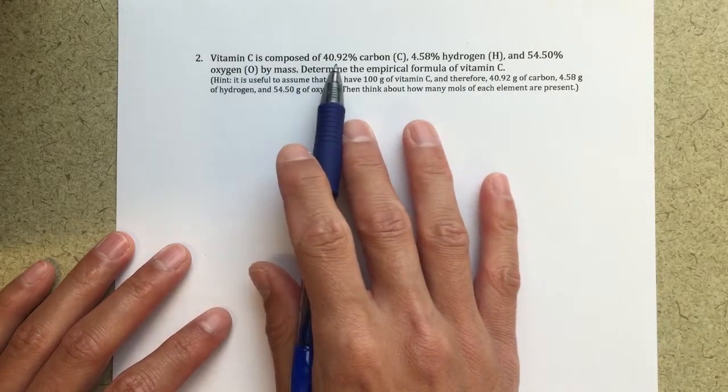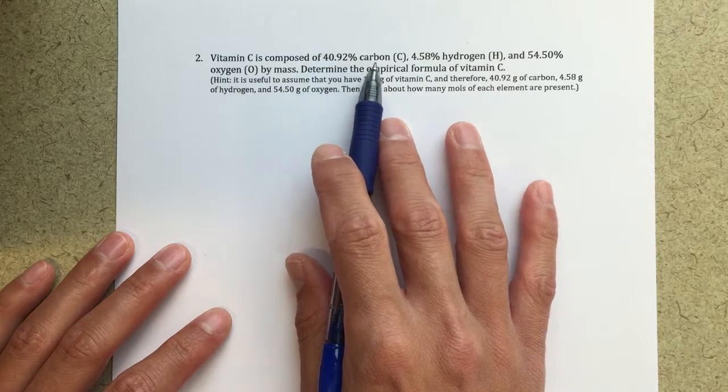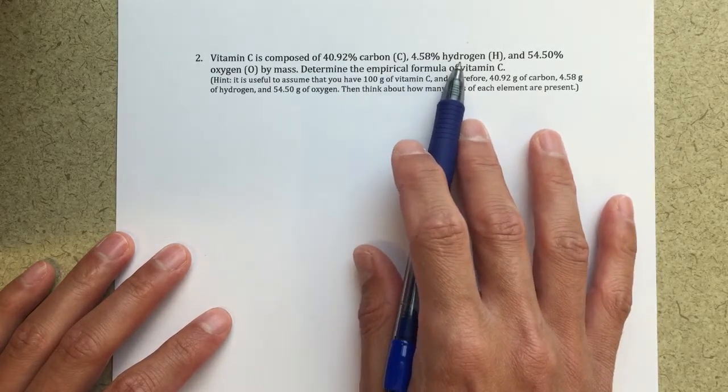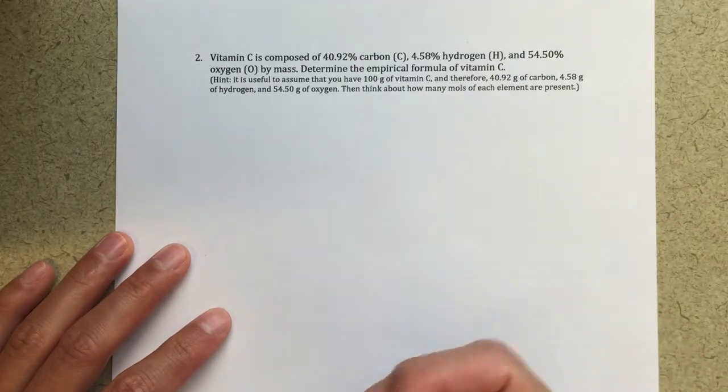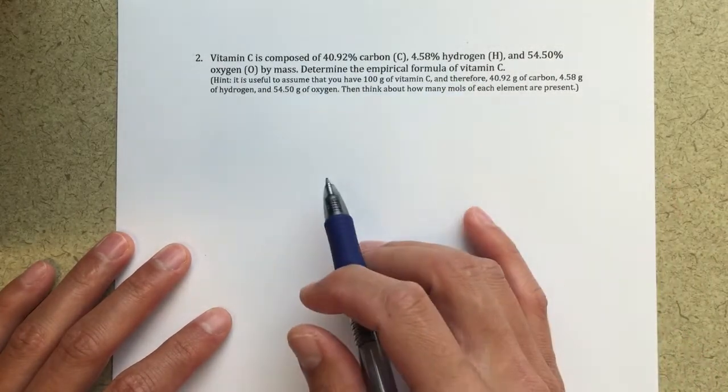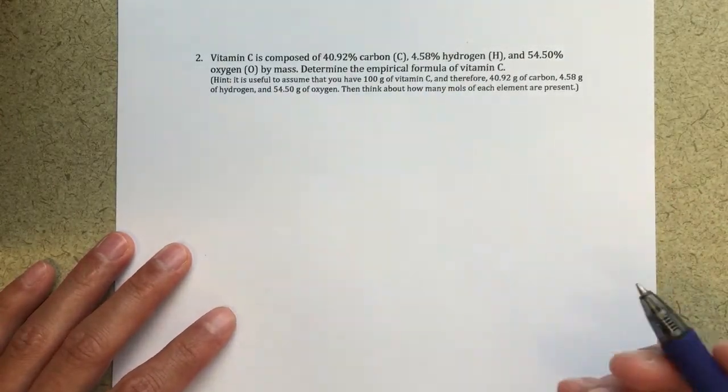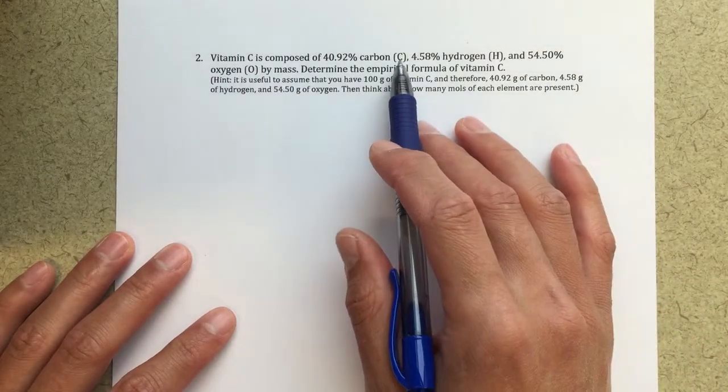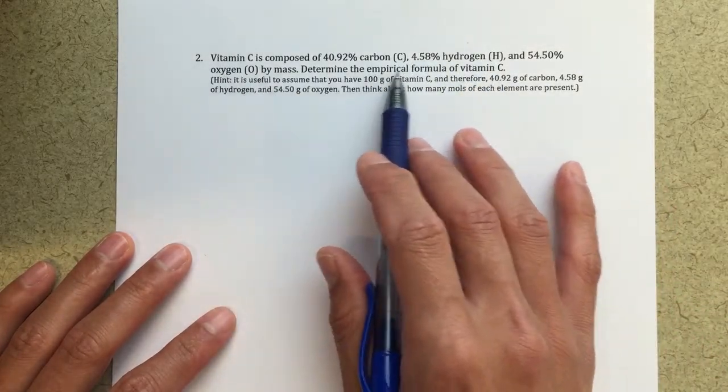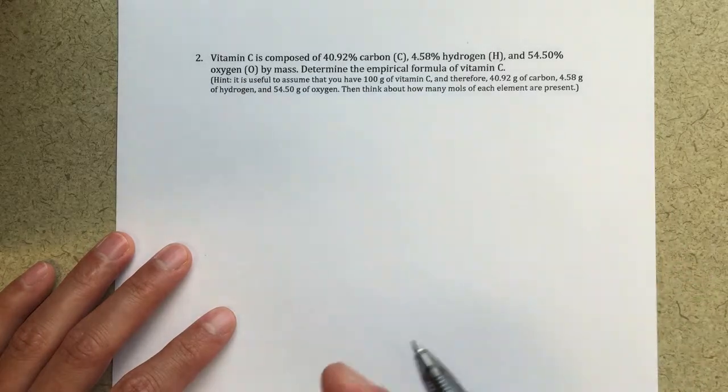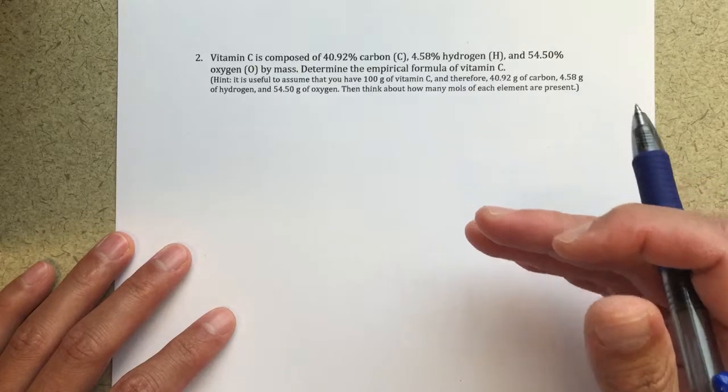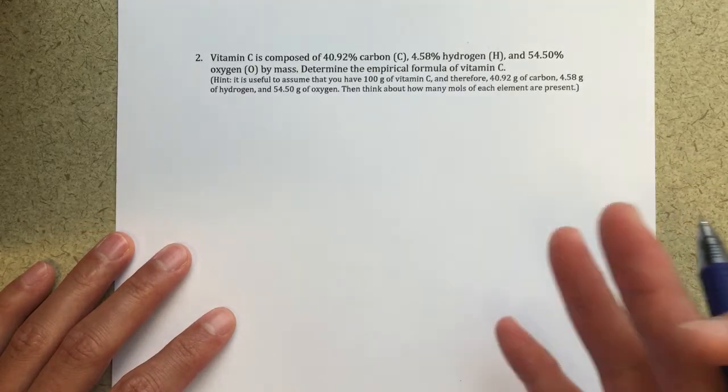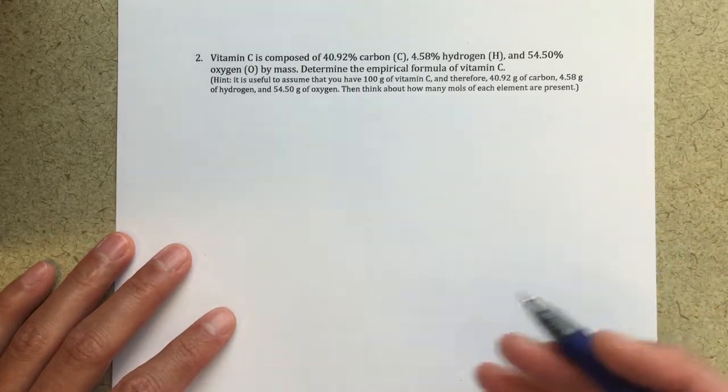This tells us the mass percent: 40.92% carbon, 4.58% hydrogen by mass. This is the percentage that each of these atoms consists of. What we're really looking for is the ratio of carbon to hydrogen to oxygen. The empirical formula tells us the simplest way to express the ratio of carbon atoms to hydrogen atoms to oxygen atoms in this vitamin C molecule.